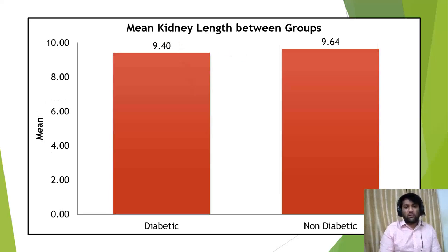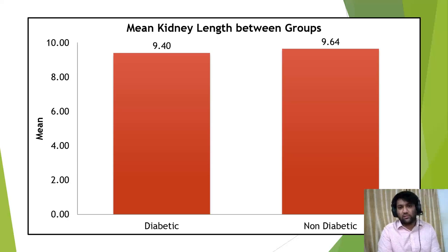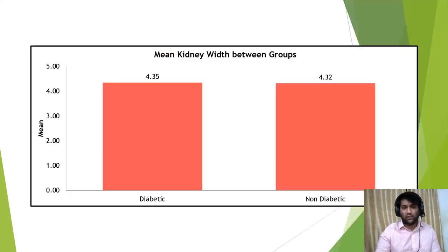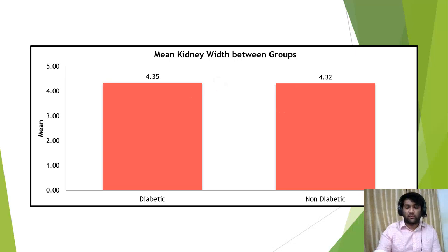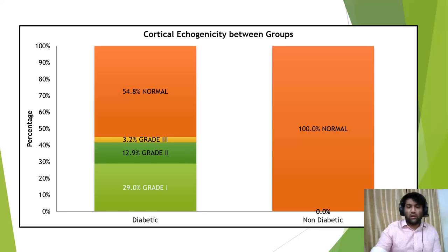We measured mean kidney length between the two groups and found no statistically significant difference, with p-value considered less than 0.05. Similarly, mean kidney width between the two groups showed no statistically significant difference. Looking at cortical echogenicity, all non-diabetic patients had normal or grade 0, while a few diabetic patients had grade 1 and grade 2 renal cortical changes.